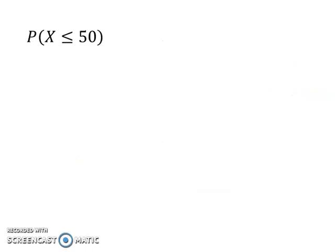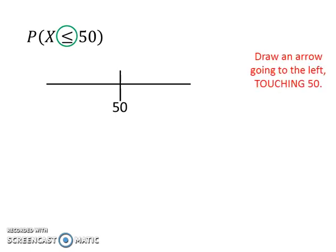Next, we have probability of x less than or equals to 50. To determine whether to add or minus 0.5, draw a line with 50 on it like this. Because of the less than or equal sign here, we need to draw an arrow going to the left of 50, touching the 50. In order for the arrow to touch 50, we move forward a little bit from 50. Since we move forward a little bit, we need to add 0.5 to 50. Thus, the probability becomes probability of x less than 50.5.